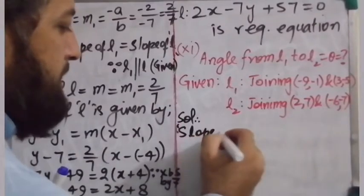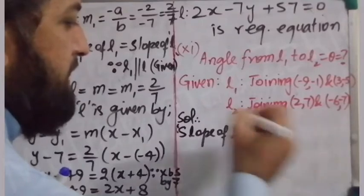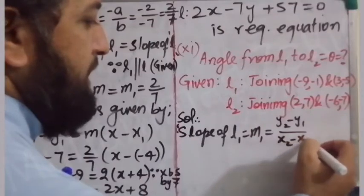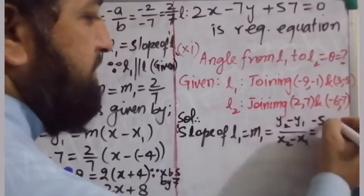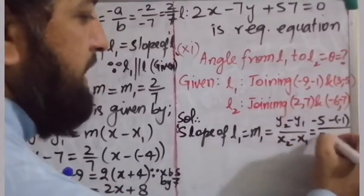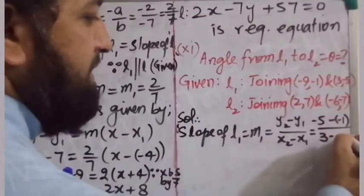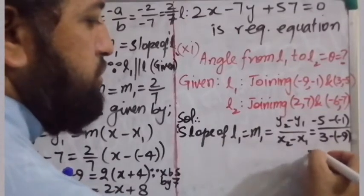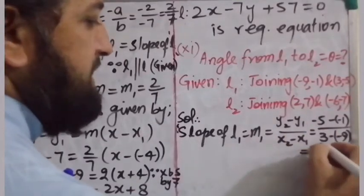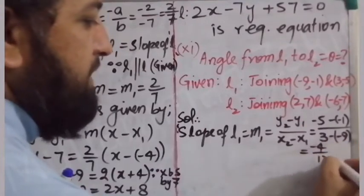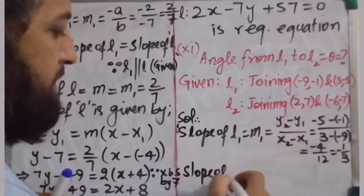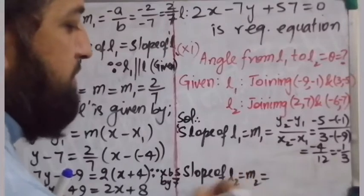Slope of L1 is M1. The slope formula is (y2 - y1) / (x2 - x1). Here y2 is -5, y1 is -1, x2 is 3, and x1 is -9. This becomes (-5 + 1) / (3 + 9) = -4 / 12 = -1/3. So M1 = -1/3.